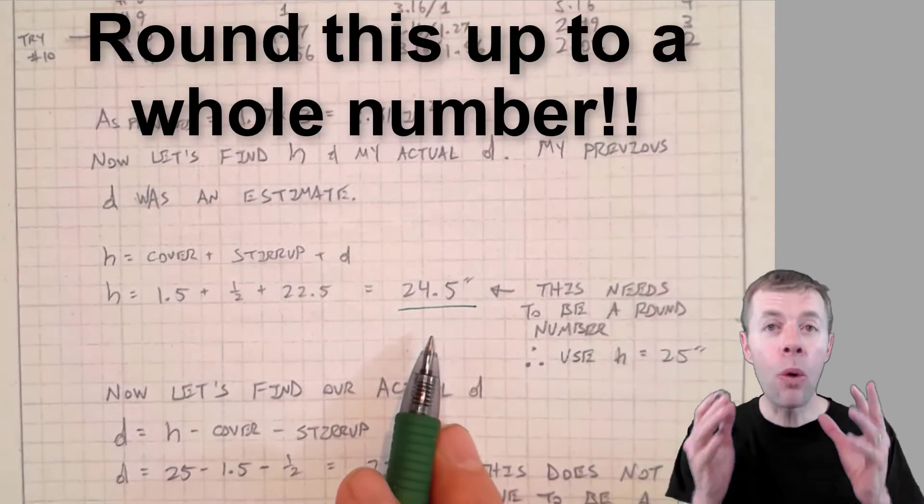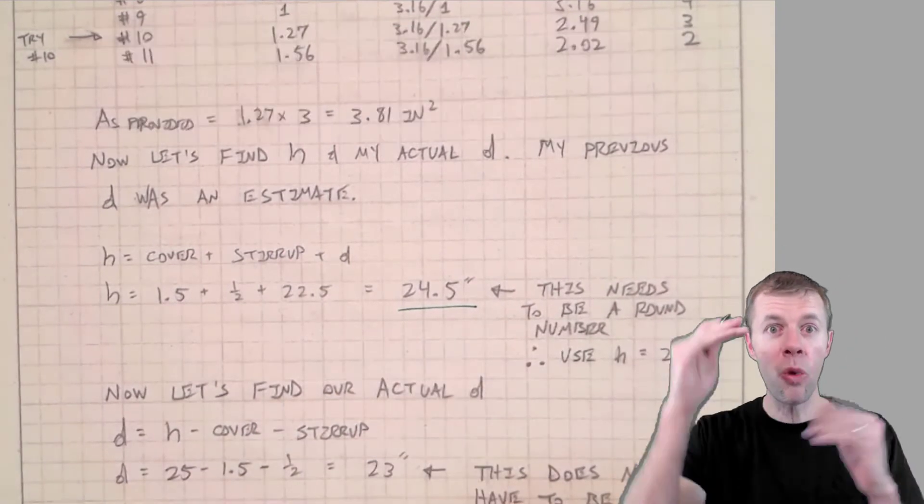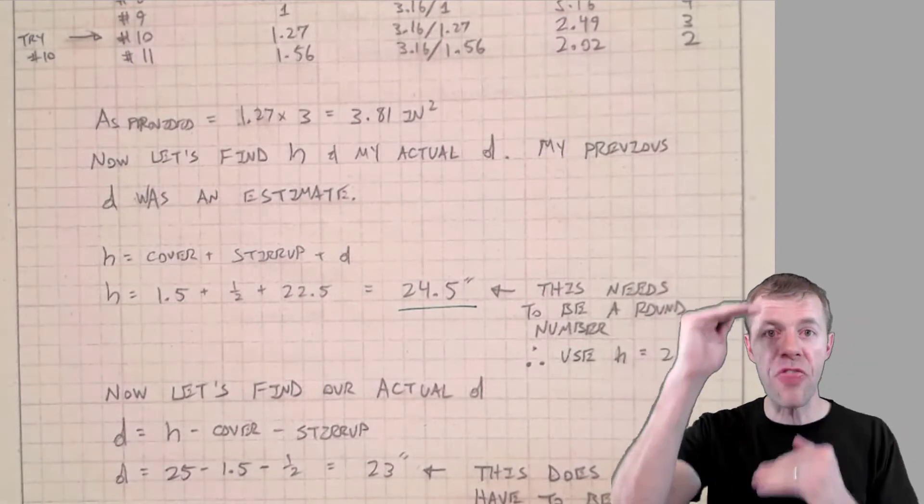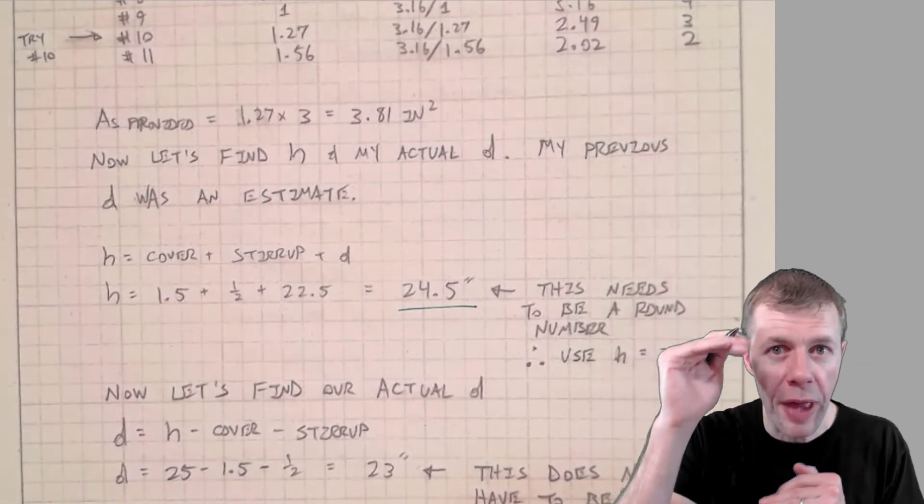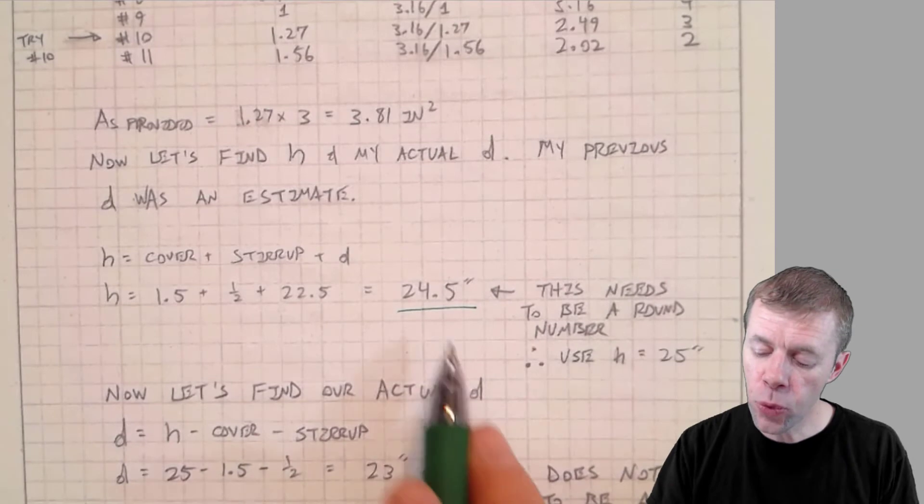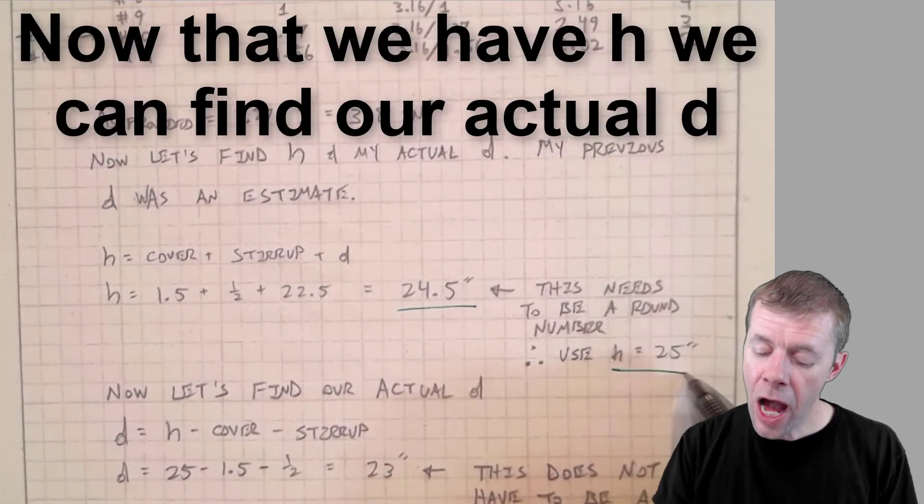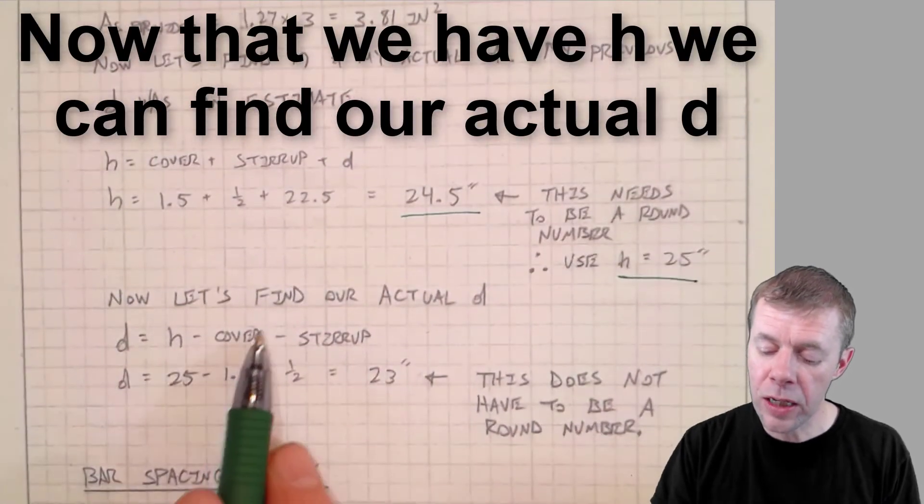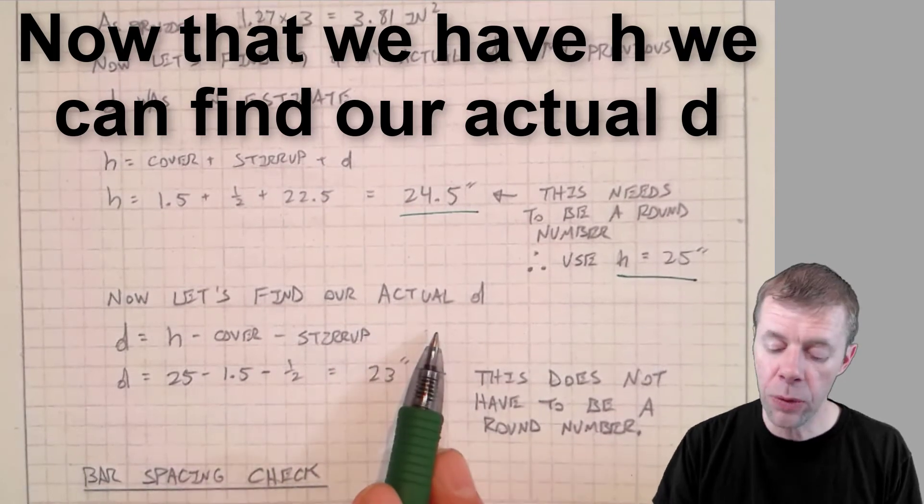And I get my H now is 24 and a half inches. Now this needs to be a round number. I want to build a beam with a round number for the width and also the overall depth. So I'm going to round this up to 25 inches.